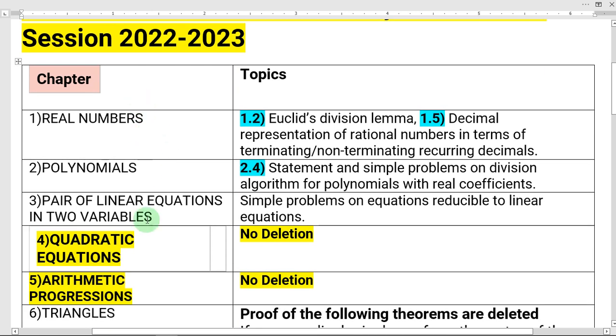In first column there are chapters named. In second column there are topics named. So note down from here.